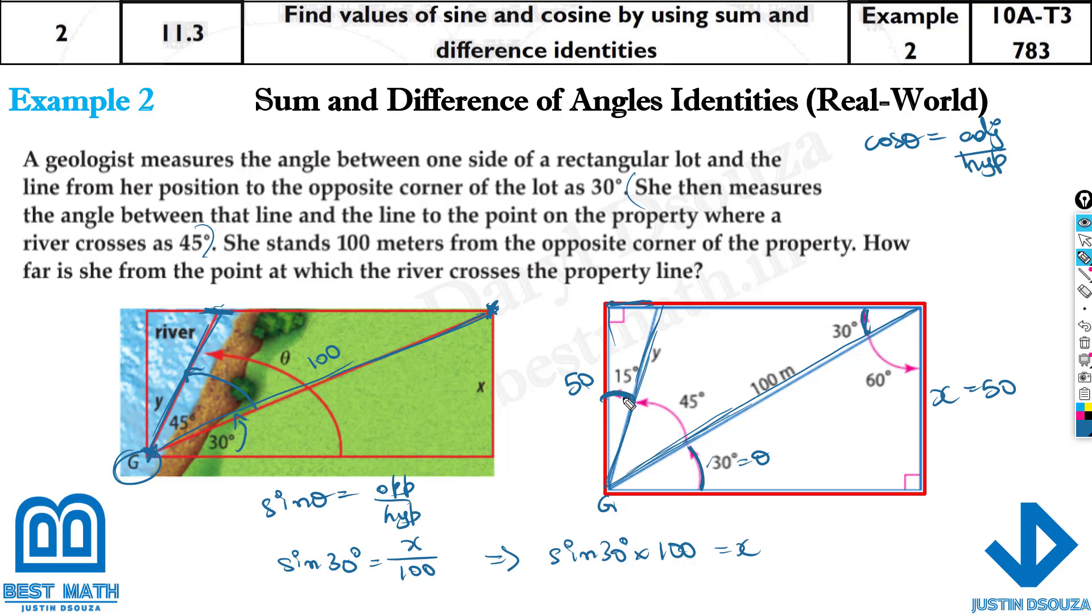Because 15 degrees is the theta. This is theta. Adjacent to it is 50. So cosine 15 is equal to adjacent is 50 divided by what is hypotenuse? That is unknown, Y. So Y will be 50 divided by cosine 15.